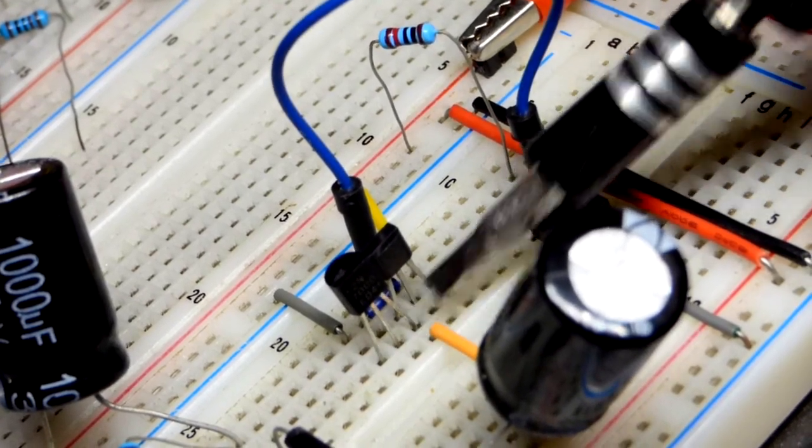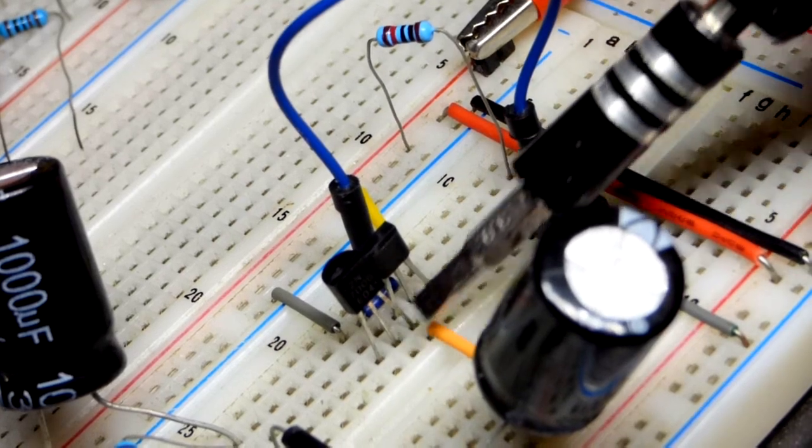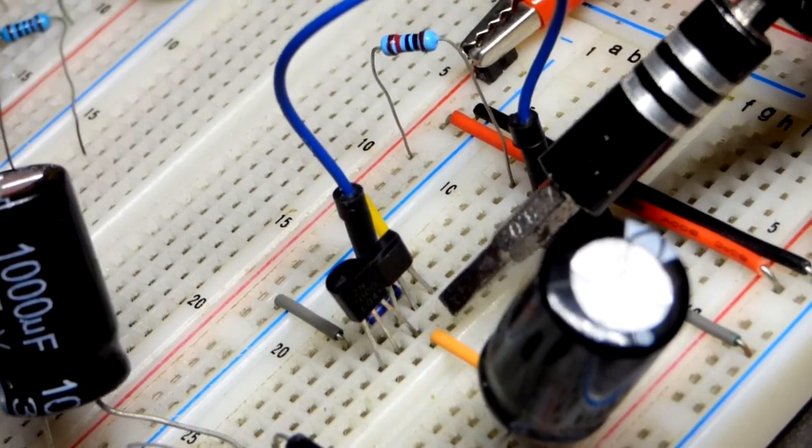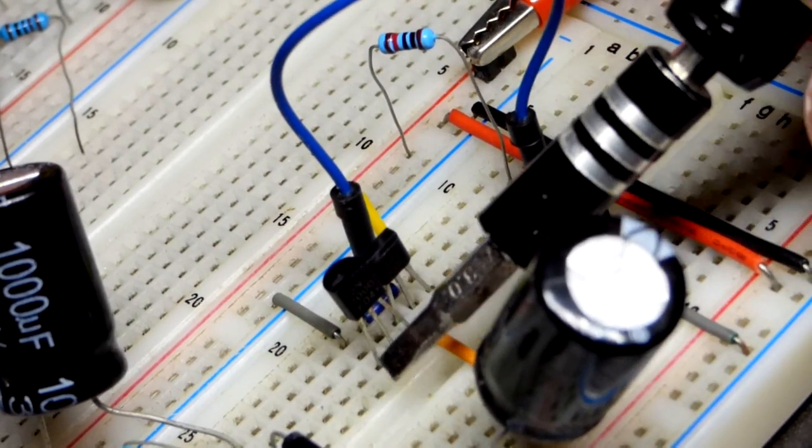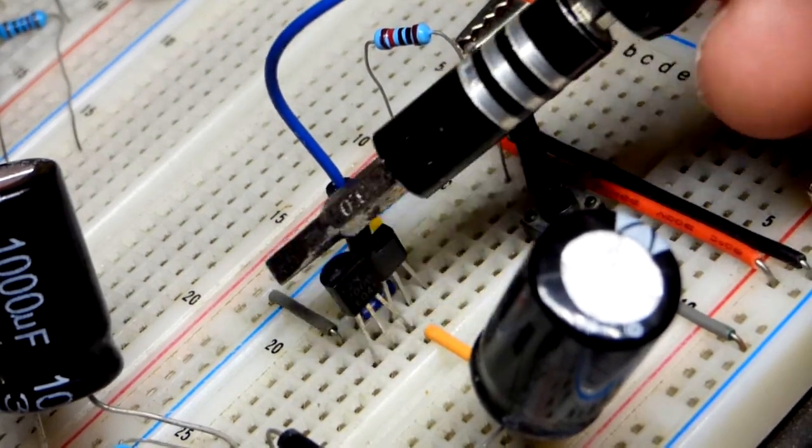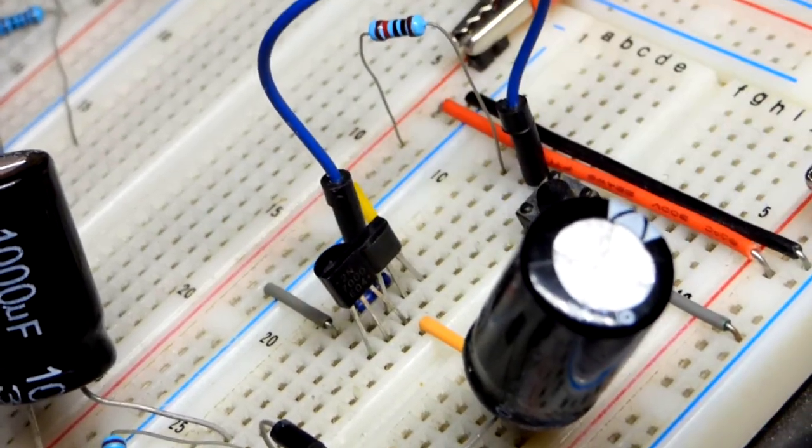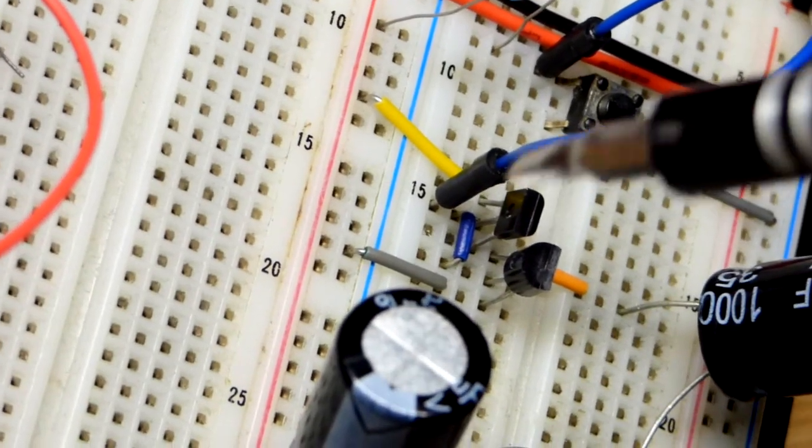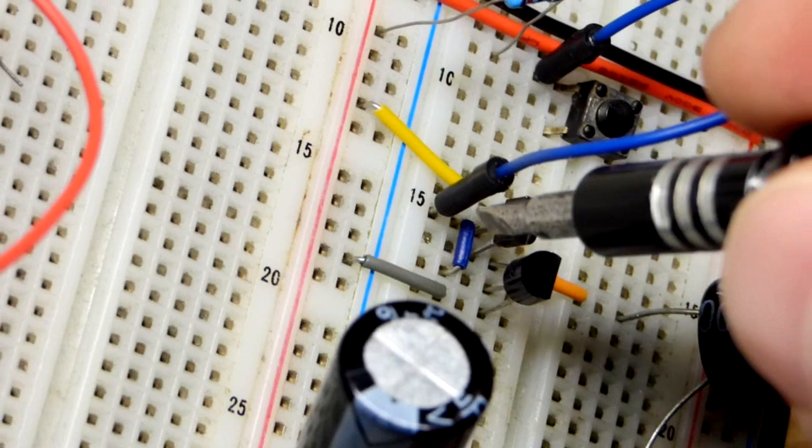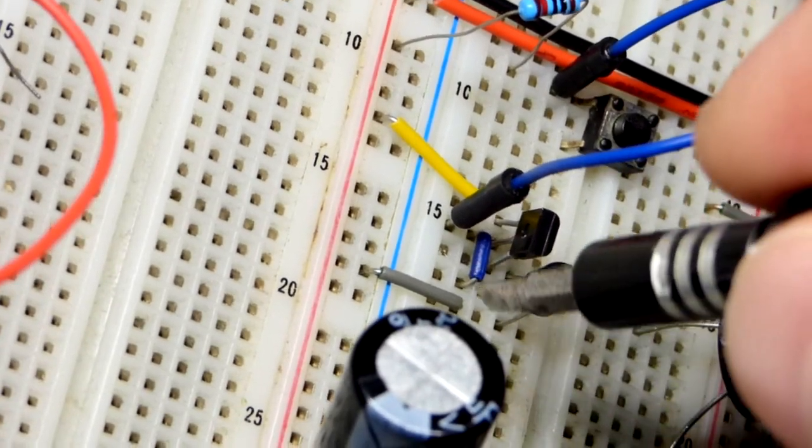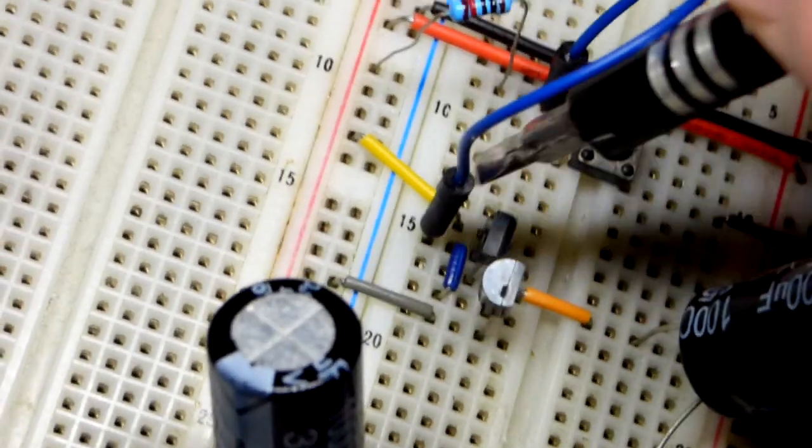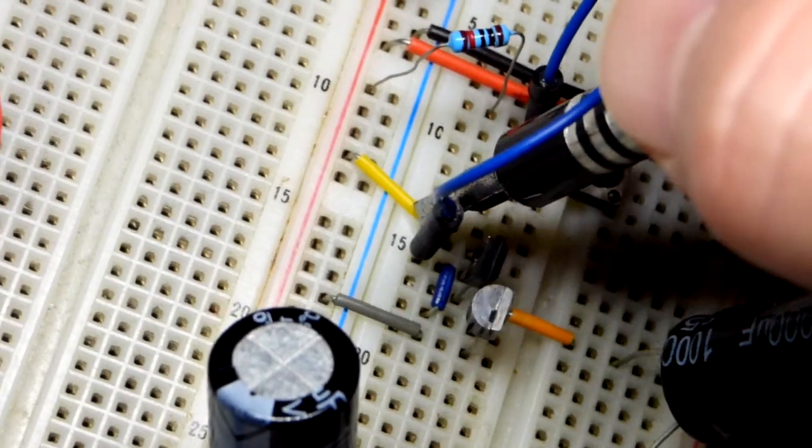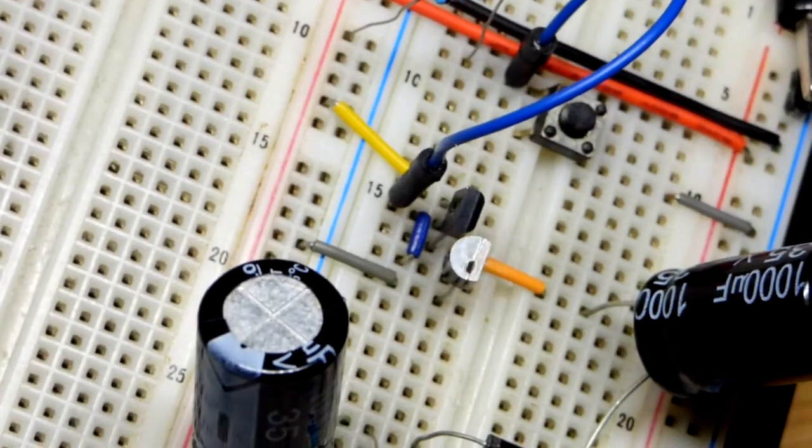So in any case, we have the drains together. The gates are one row away on both sides there. And then the source is two rows away. You can see the source to the 2N7000 goes to the negative supply directly to ground. And from this angle, you can see this little blue jumper connects the gates directly together. They see the same voltage. And we have the source to the BS250 top pin there going directly to the positive supply.